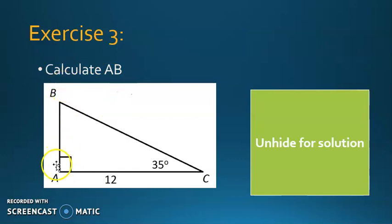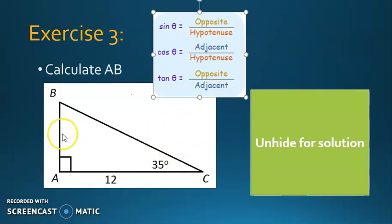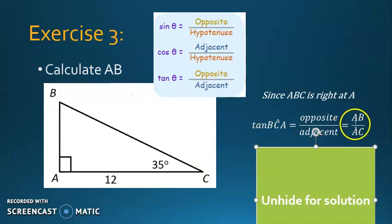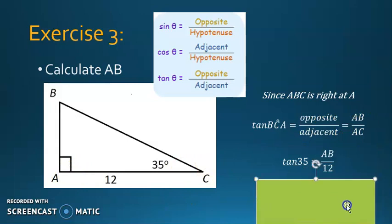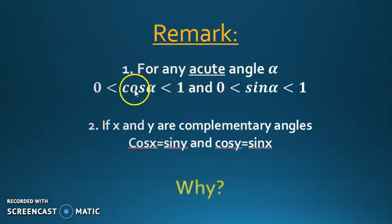Exercise 3: You have a triangle and are asked to calculate AB. We have the measurement of angle C and the length of AC — AC represents the adjacent side of angle C — and we need to calculate AB, which represents the opposite side of C. The ratio combining the opposite and the adjacent side is tangent. In right triangle ABC at A, tangent of C is opposite over adjacent, so AB over AC. Replace tangent BCA with tangent 30, keep AB, and replace AC with 12. Cross multiplication gives AB equals 12 times tangent 35, which is 8.4.